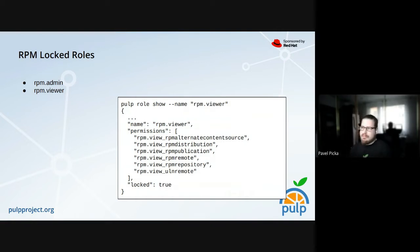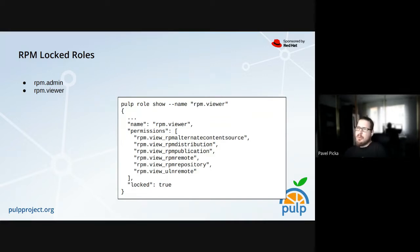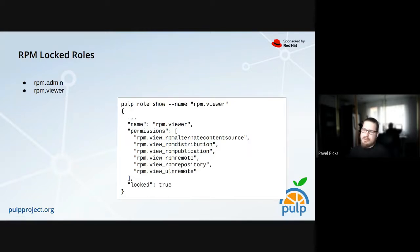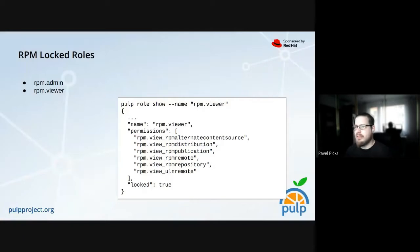There are predefined locked roles for specific endpoints like remote or repository. RPM has two more locked roles as a bootstrap for users: RPM admin and RPM viewer. RPM admin can do everything in the RPM plugin — they have all permissions across the plugin. RPM viewer is just for viewing, but it's not locked to one endpoint — they can see everything from content through repository to distribution.